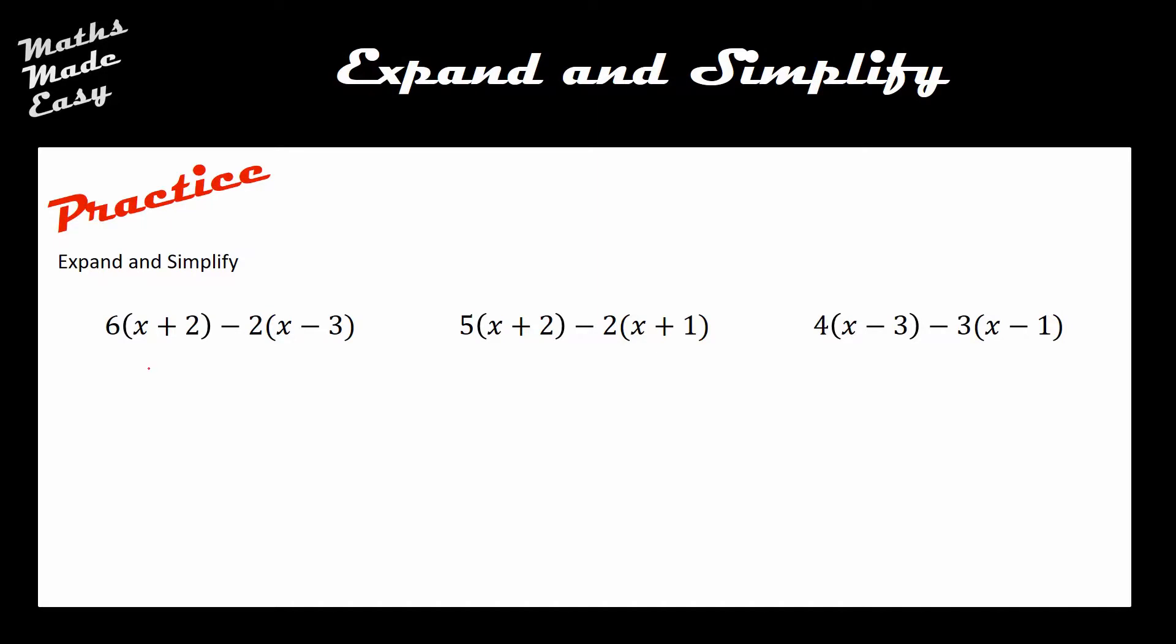In this first one, 6 times x is 6x and 6 times positive 2 is positive 12. Negative 2 times x is negative 2x, and negative 2 times negative 3 is positive 6. I can see 6x take away 2x is 4x, and plus 12 plus 6 is plus 18.